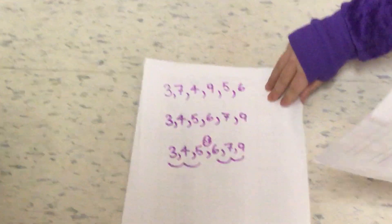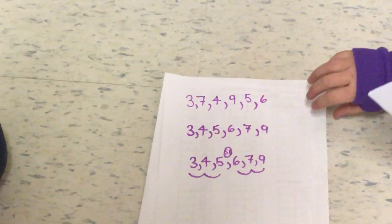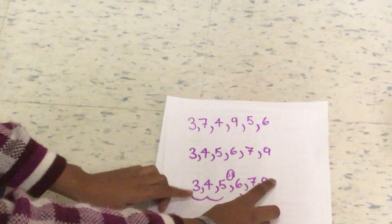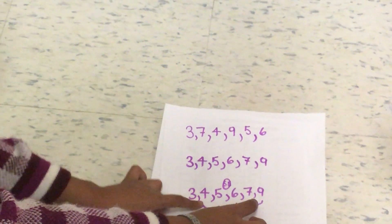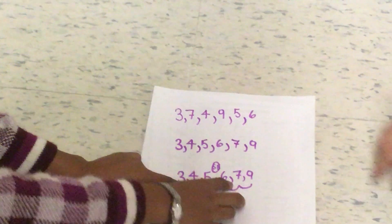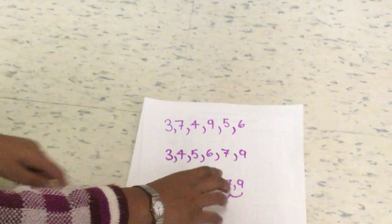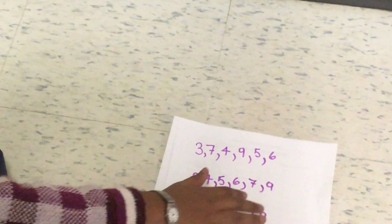To find the median, you have to find the middle number. So we go 3 and 9, 4 and 7, 6 and 5. There's no middle number, so we have to put 5.5.